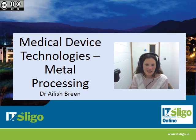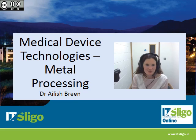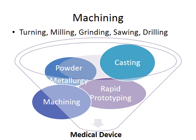Hello again. In the next section I'm going to talk about machining and the different types of machining techniques that are used in metal processing. So traditional machining would include turning, milling, grinding, sawing and drilling, and certainly these are all used in the manufacturing of metallic medical devices. But there are other types of machining as well which I will go through in the next few slides.